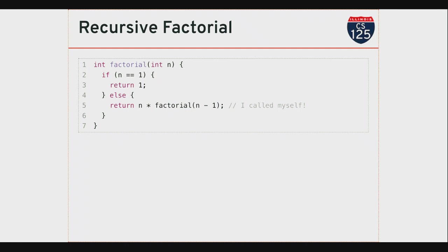Factorial of n is n times n-1 times n-2 times n-3. It actually has sort of a recursive definition: the factorial of n is equal to n times the factorial of n-1. And we can continue defining that way until we get to 1—the factorial of 1 is 1.